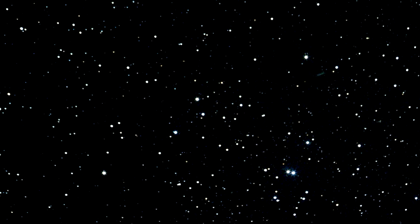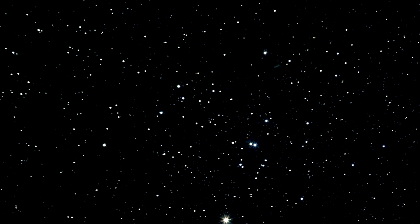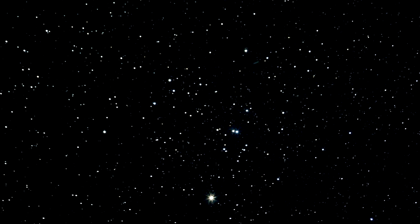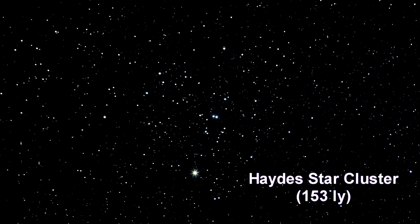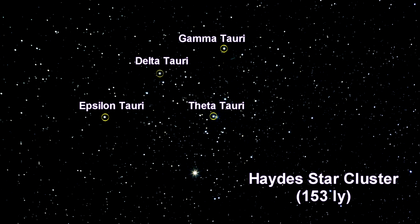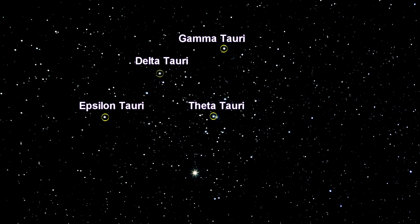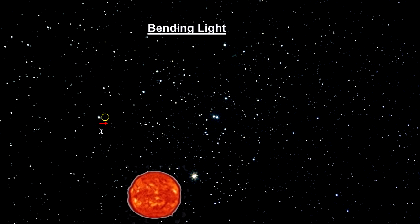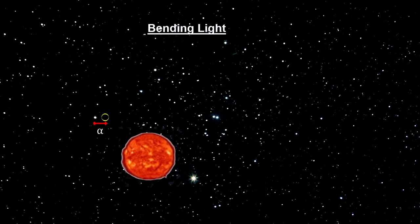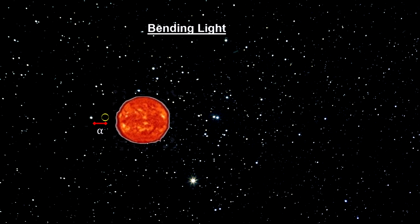Einstein suggested that a solar eclipse could be used to find the exact number. In 1919, a solar eclipse was slated to occur with the Sun silhouetted against the Hyades star cluster, the nearest open cluster to our solar system. Here's the Hyades star configuration with some of the brightest stars identified.